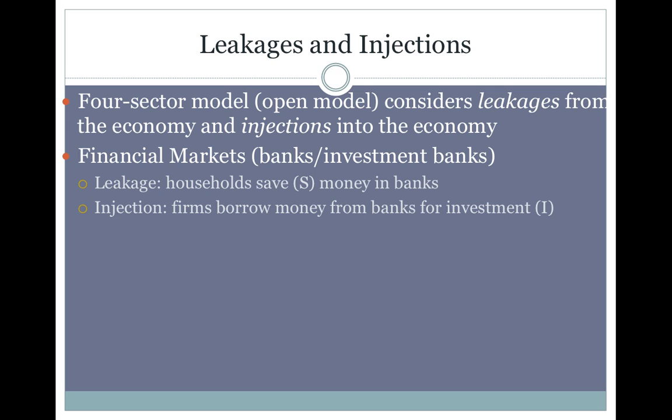Banks lend out savings for what's called investment purposes. For example, somebody might want to buy a house, or a business might take out a loan — they borrow money from the bank. This is considered investment. So the money that you put in the bank gets lent out; people buy houses, firms buy machinery, and so money that leaked out also kind of flows back in.